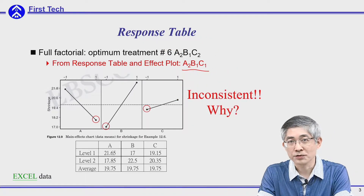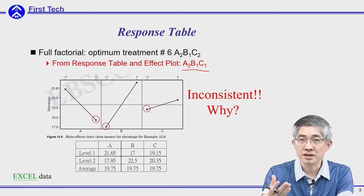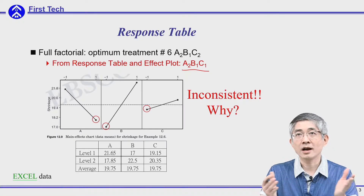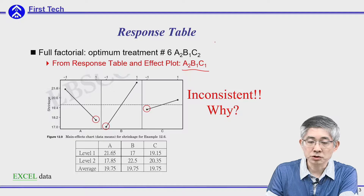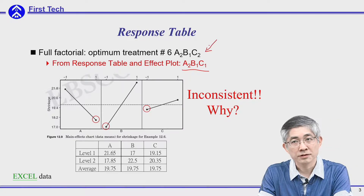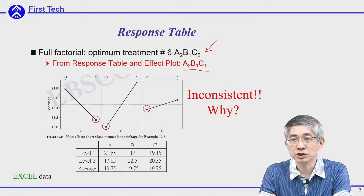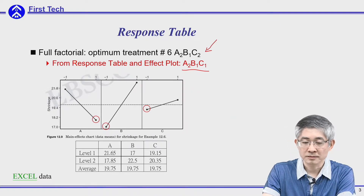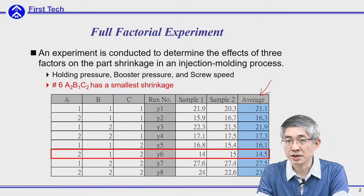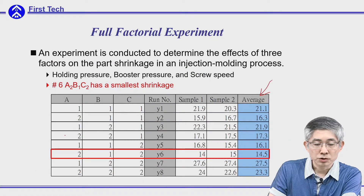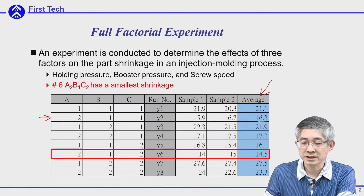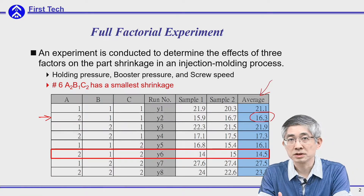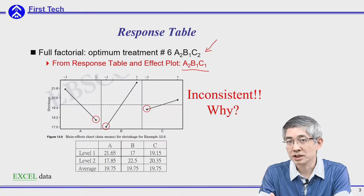Now the problem is, if you compare this selection with the previous full factorial, you'll find out these two are inconsistent. In the full factorial, the optimal treatment is 2, 1, 2. However, from the analysis of mean, the prediction is 2, 1, 1. If you compare the result in the real experiment, 2, 1, 1 is shown here, and the actual shrinkage is 16.3, which is worse than combination number 6. So we have a prediction issue here.